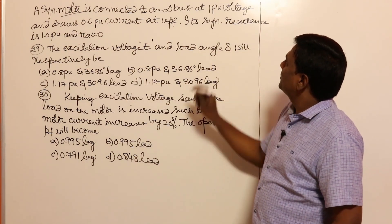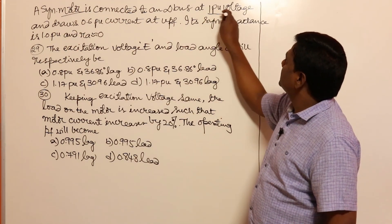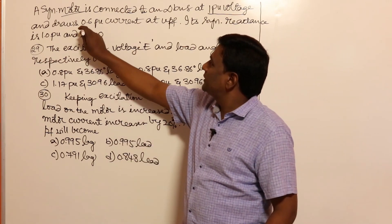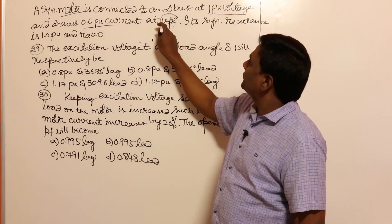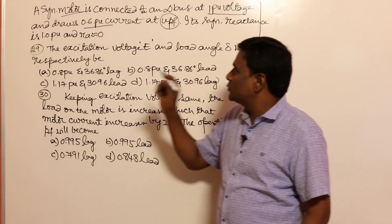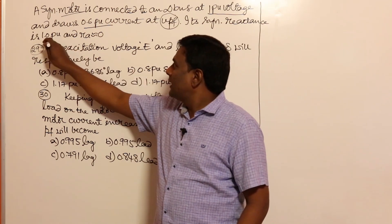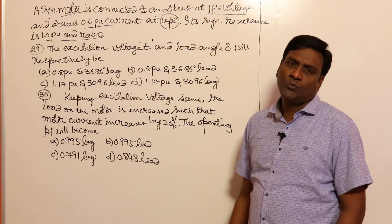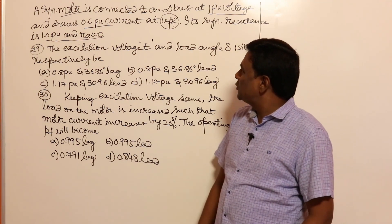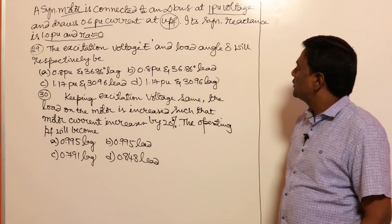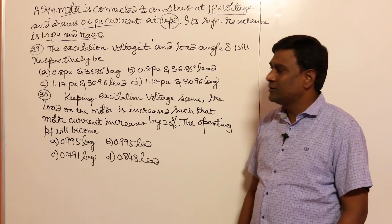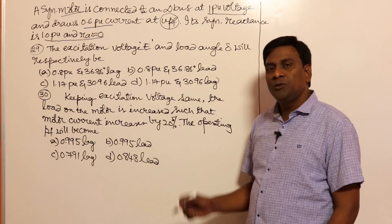A synchronous motor is connected to an infinite bus at one per unit voltage and draws 0.6 per unit current at unity power factor. Its synchronous reactance is one per unit and the resistance is zero (negligible). Now, the excitation voltage E and the load angle delta will be respectively — some values are given.